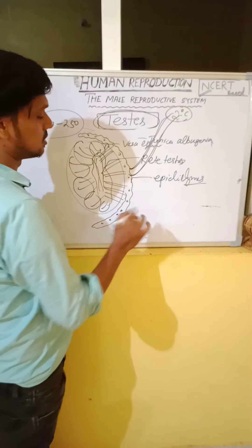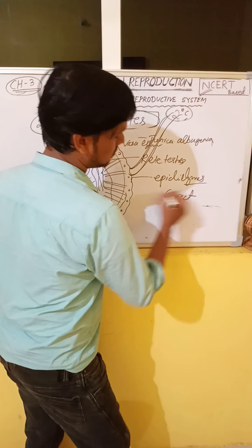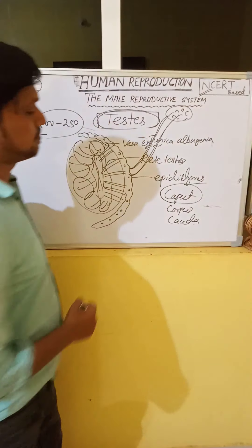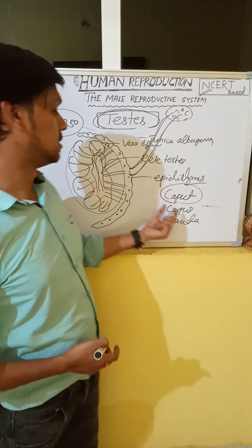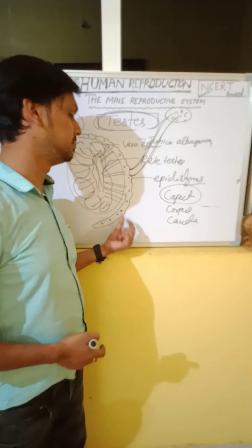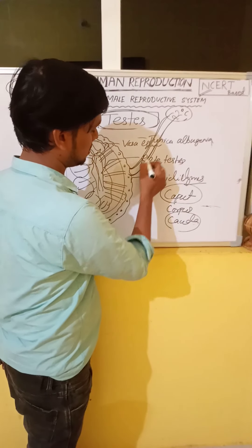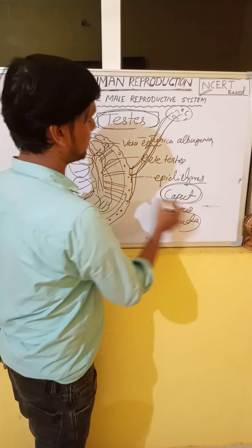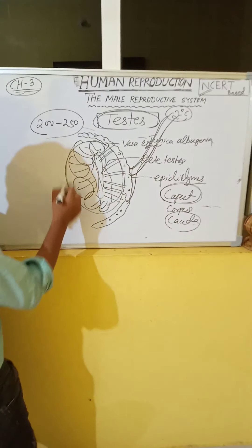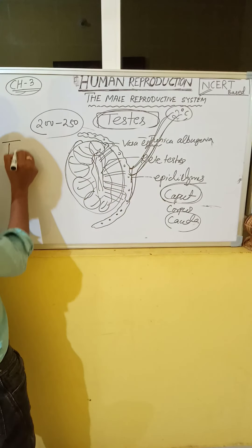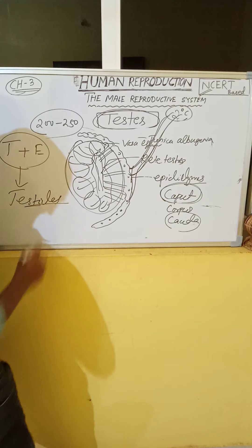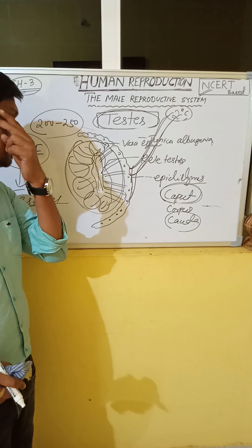The epididymis consists of three parts: caput (the head or first part), corpus (the middle part), and cauda (the tail or last part). The cauda epididymis is connected with the vas deferens, and the caput epididymis is connected with the testis. Together, the testis and epididymis are collectively called the testicles.